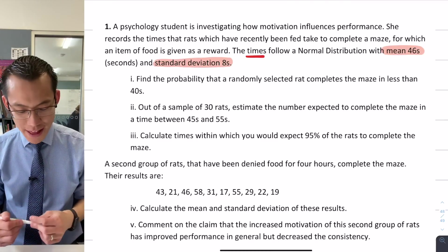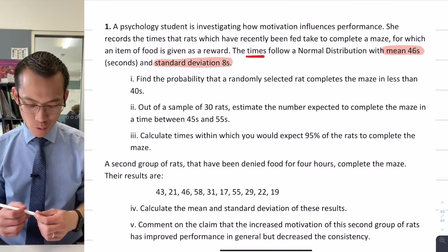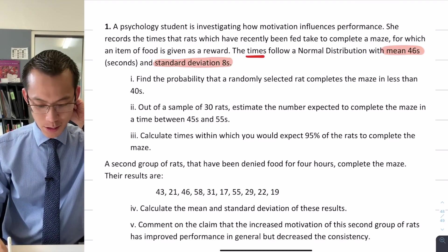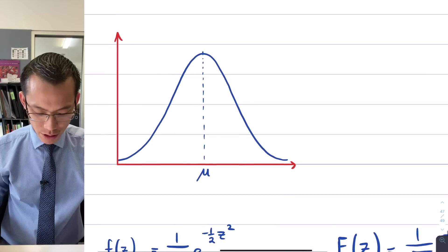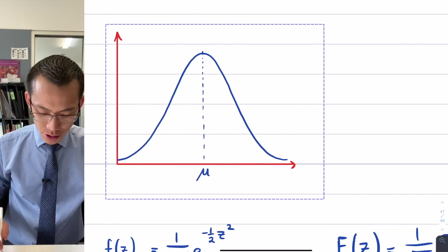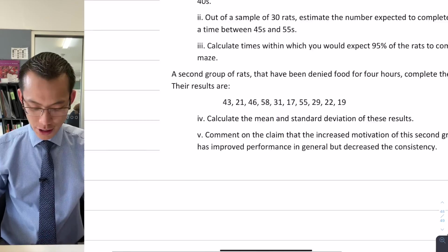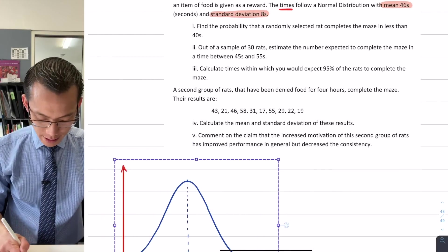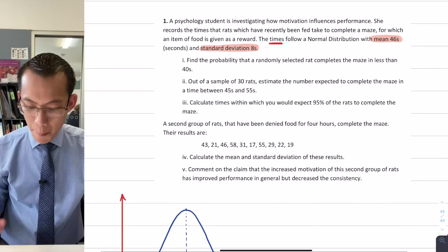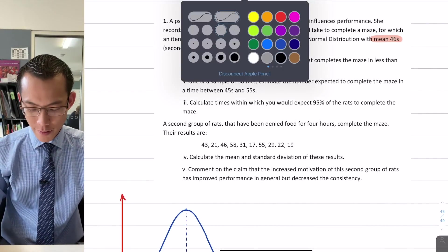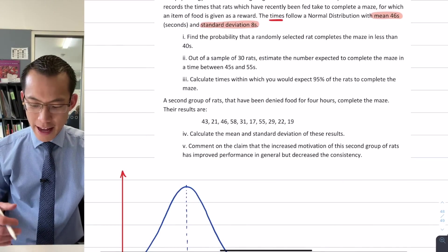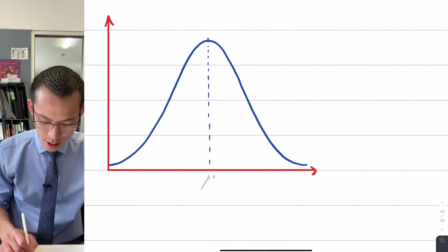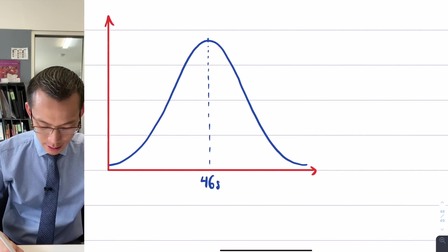Then comes the first question: find the probability that a randomly selected rat completes the maze in less than 40 seconds. So how are we going to do this? What I'm going to do is grab my normal distribution over here and impose some of the information from the question onto my graph. We have a mean of 46 seconds. That's the first numerical piece of information I get, so that mean, 46 seconds, represents the center of my normal distribution.